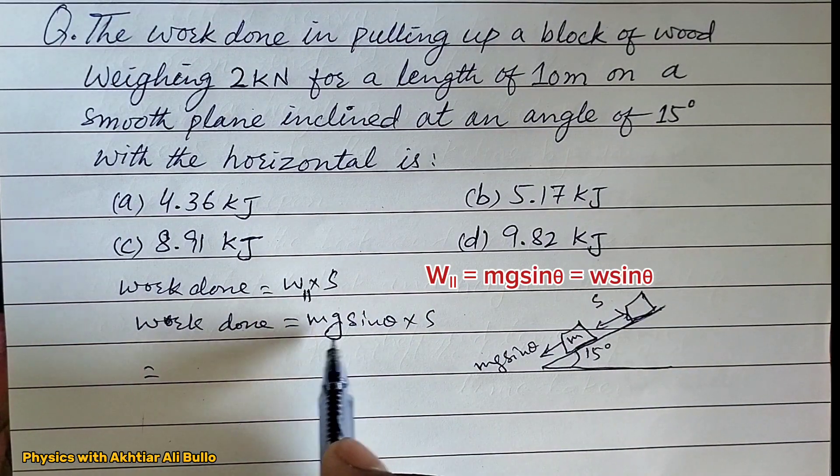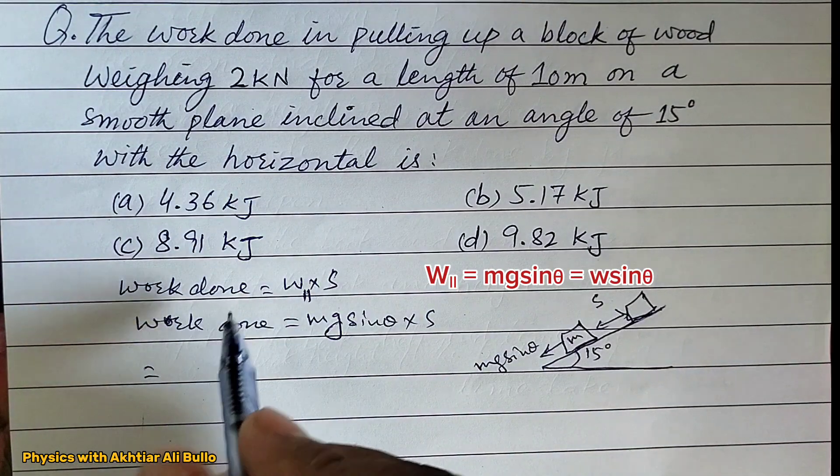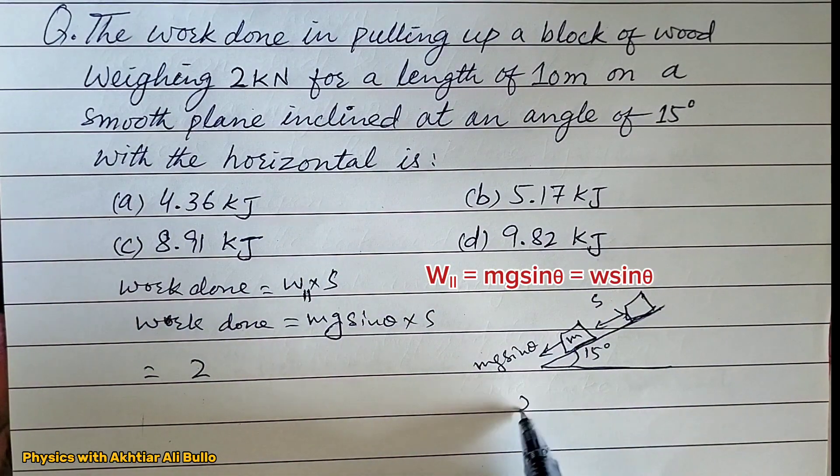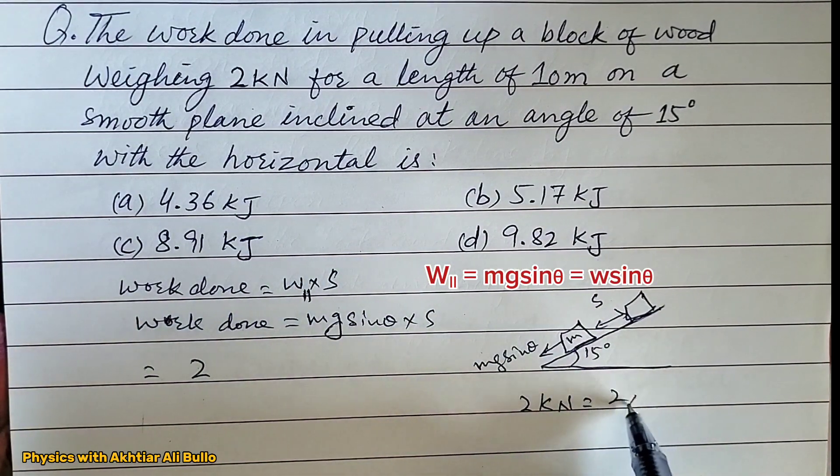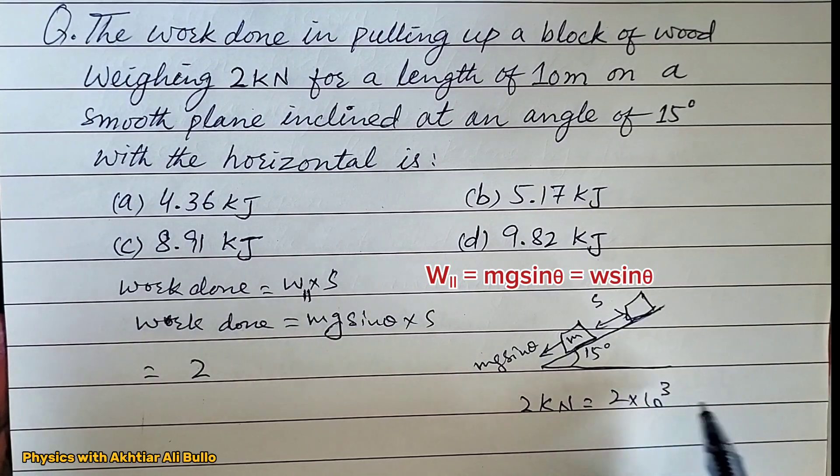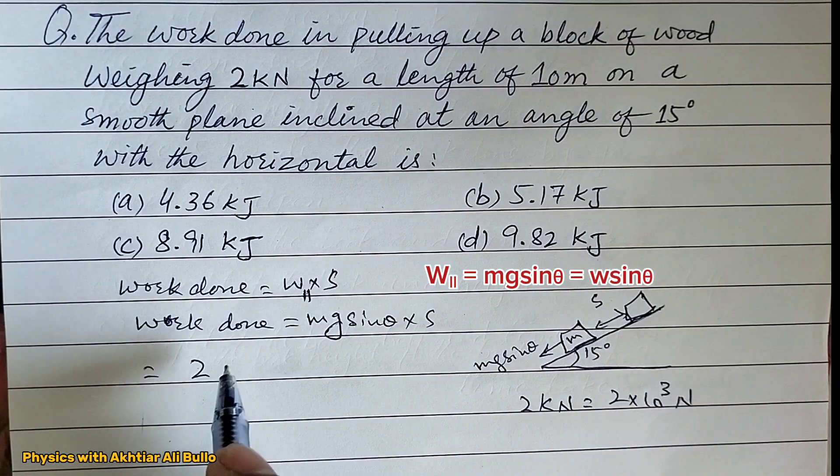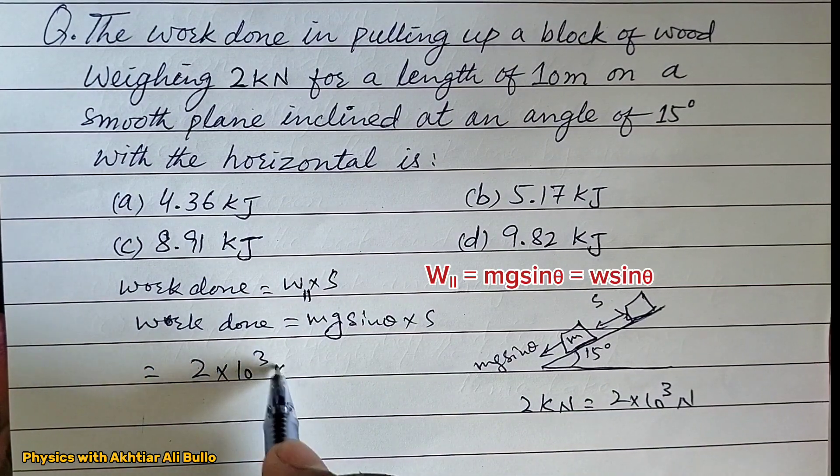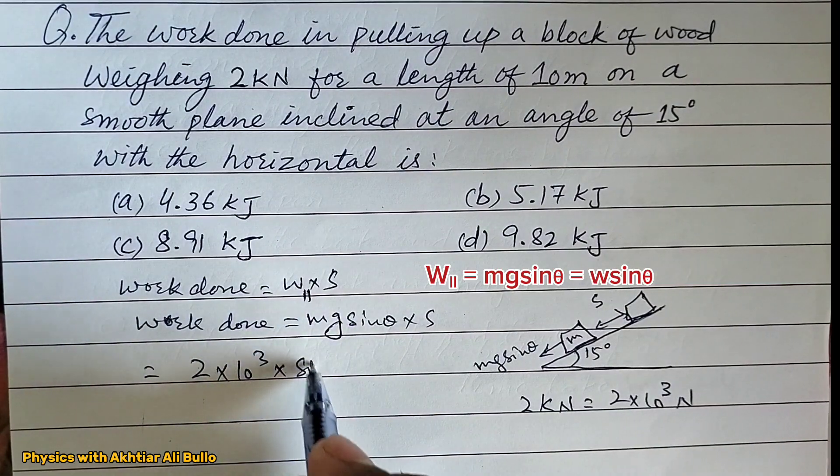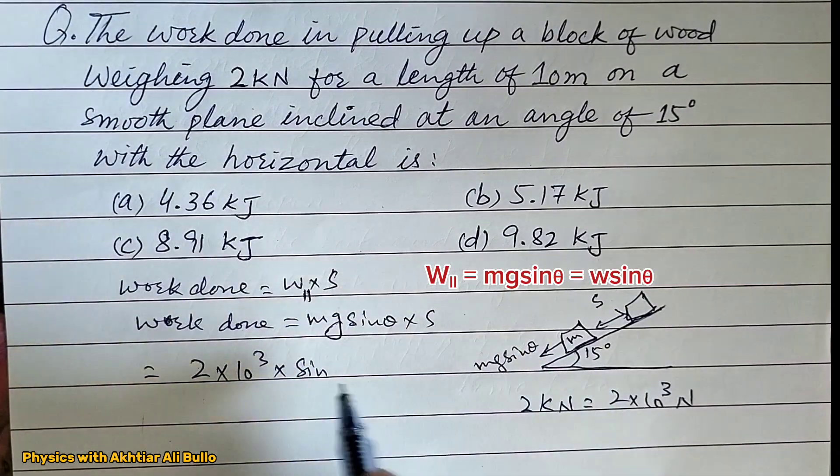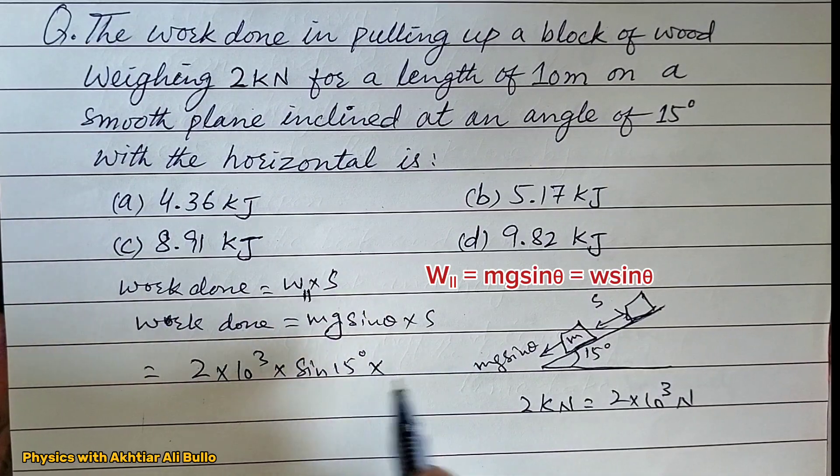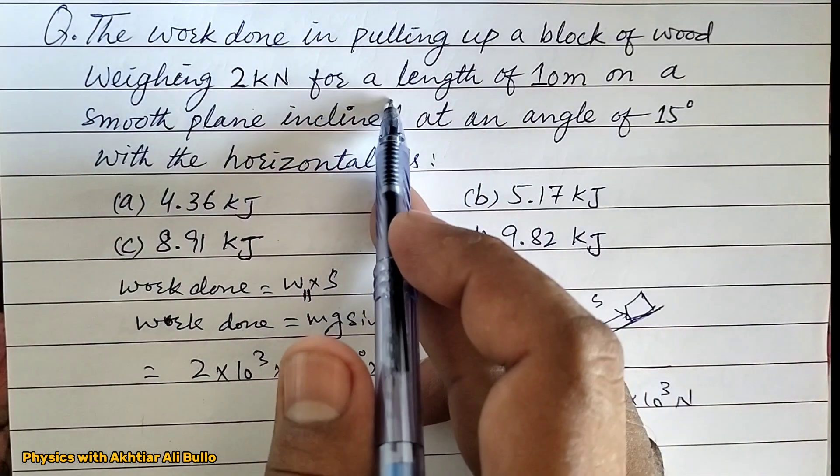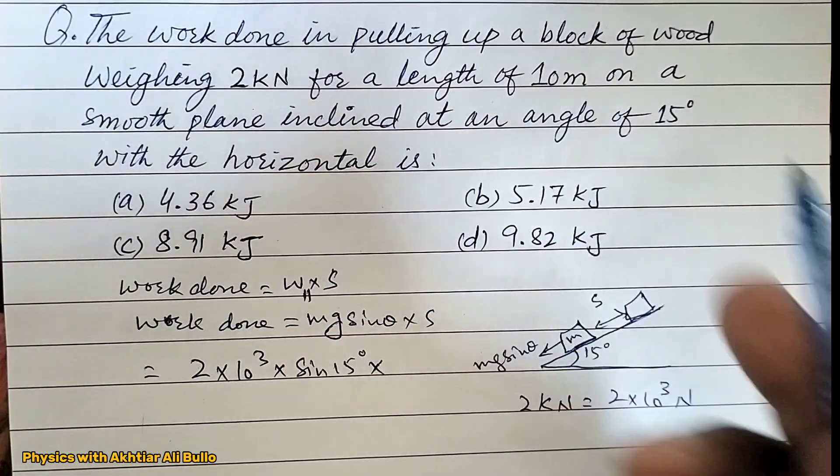Weight is given as 2 kN, which means 2 into 10 to the power 3 N. So weight is 2 into 10 to the power 3 into sin 15 degrees into the distance, which is the length of the plane, 10 meters.